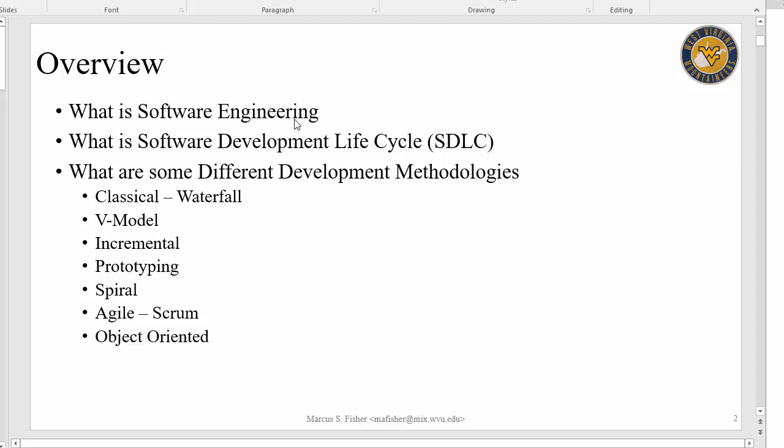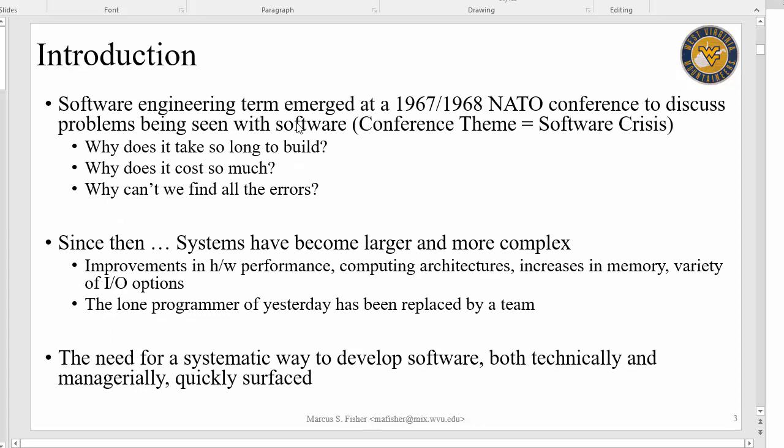Basically, just jumping into software engineering — that term came about in the late 60s. There was a NATO conference being held. You think about software today and you think about software back in the 60s. What they were trying to achieve at this conference was to tackle this software beast: why is it so difficult? Why does it take so long to build? Why are we having so many problems with building software? It costs so much, it's hard to manage.